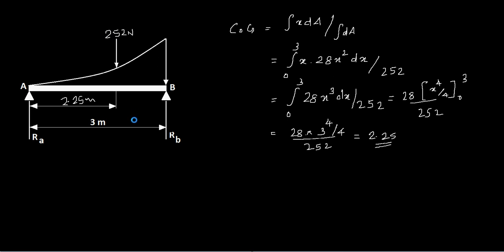Now it's just a repetition of the previous problems we discussed. You have 3 × RB = 252 × 2.25. Therefore RB = 252 × 2.25 / 3 = 189 Newton.